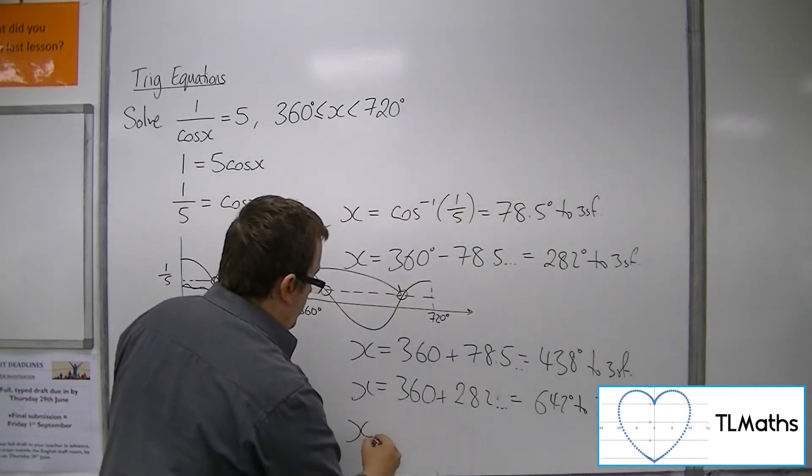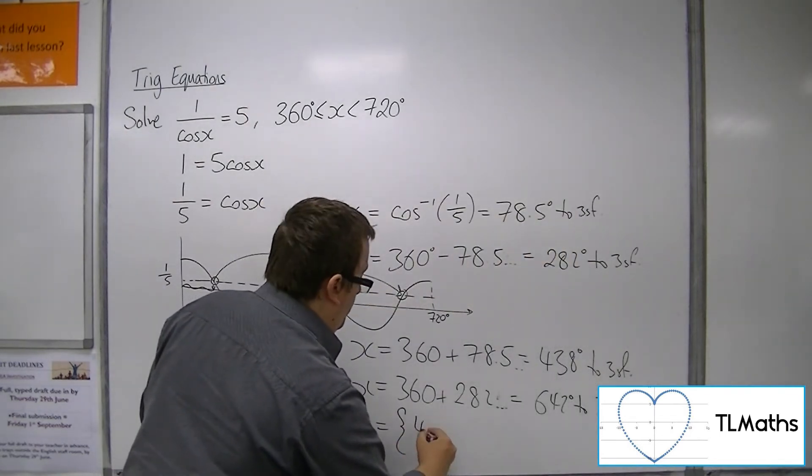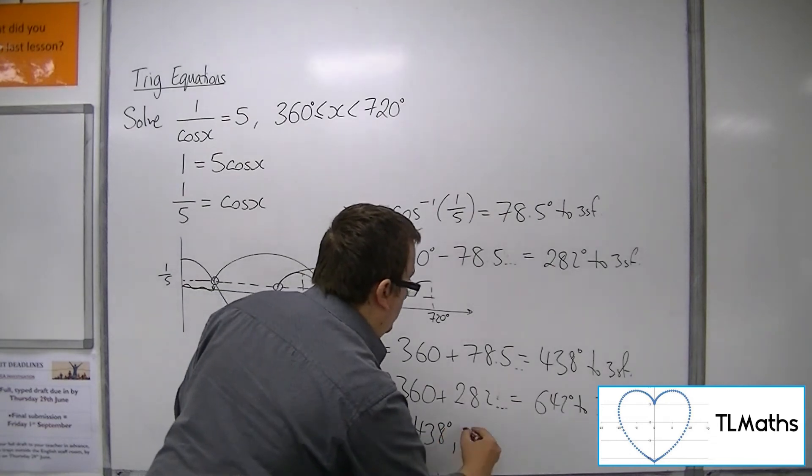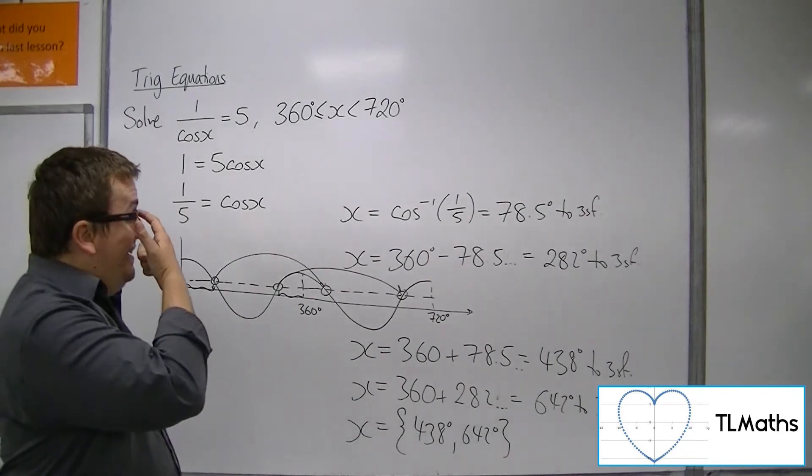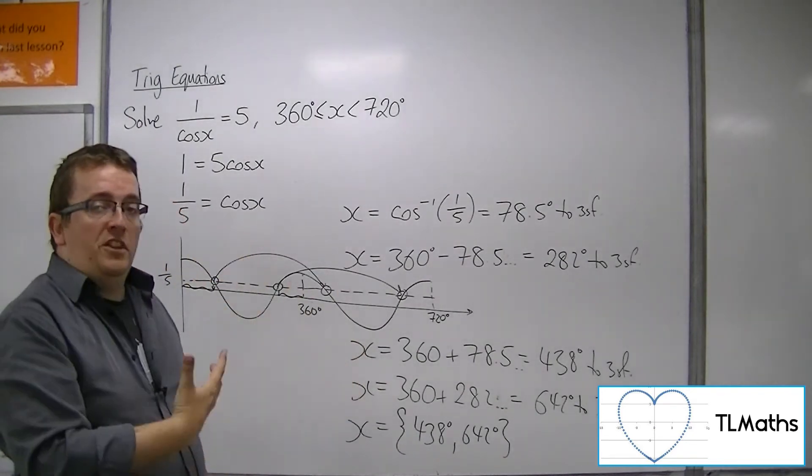So, 282 plus the 360 gets me to 642. So, the solutions I want are 438 degrees and 642 degrees to 3 sig fig. Okay, so that's how I would solve this problem.